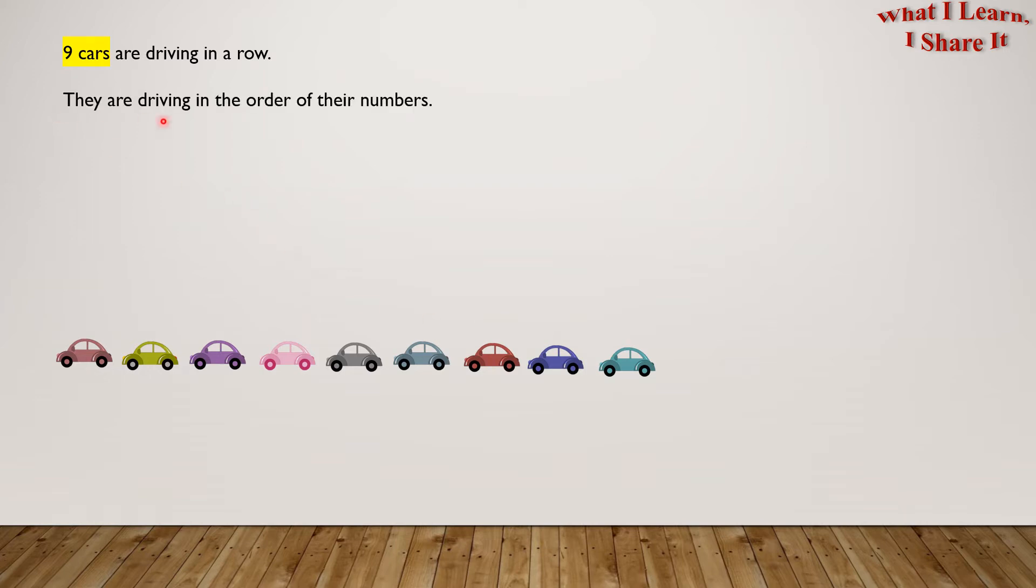They are driving in the order of their numbers. The first car has number 23 on its side. So here is number 23 for the first car. The second car has number 24 and so on. So here is number 24 for the second car.